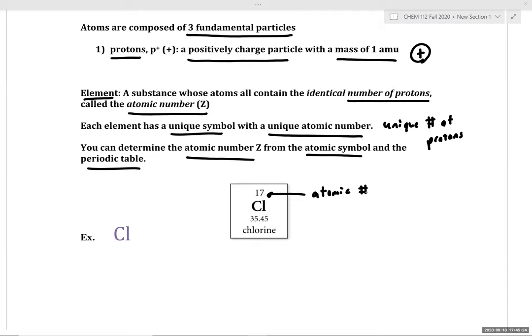How many protons does chlorine have? 17. So we have 17 protons. From the periodic table and the atomic symbol, we can figure out the atomic number and the number of protons.